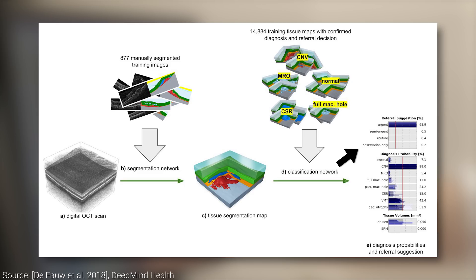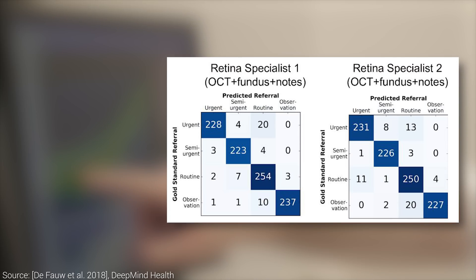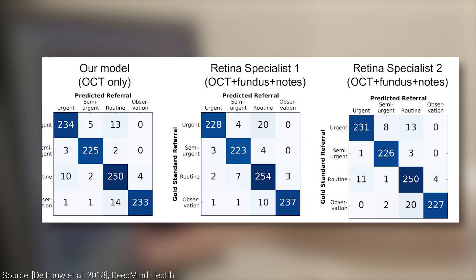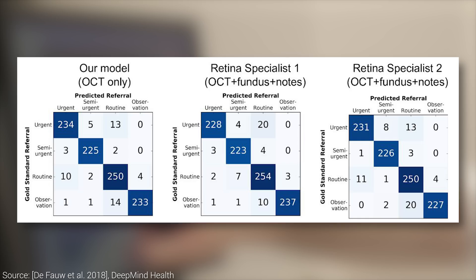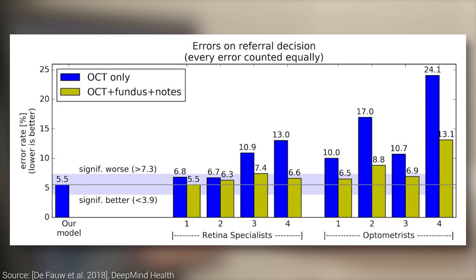The question naturally arises: how accurate is this? Let's look at the confusion matrices. A confusion matrix shows us how many of the urgent cases were correctly classified as urgent, and how often they were misclassified as something else, and what that something else was. The same analysis is performed for all other classes. Here's how the retinal specialist doctors did, and here is how the AI did — I'll leave it here for a few seconds for you to inspect it. Really good. The algorithm did significantly better than all of the optometrists and matched the performance of the number one retina specialist.